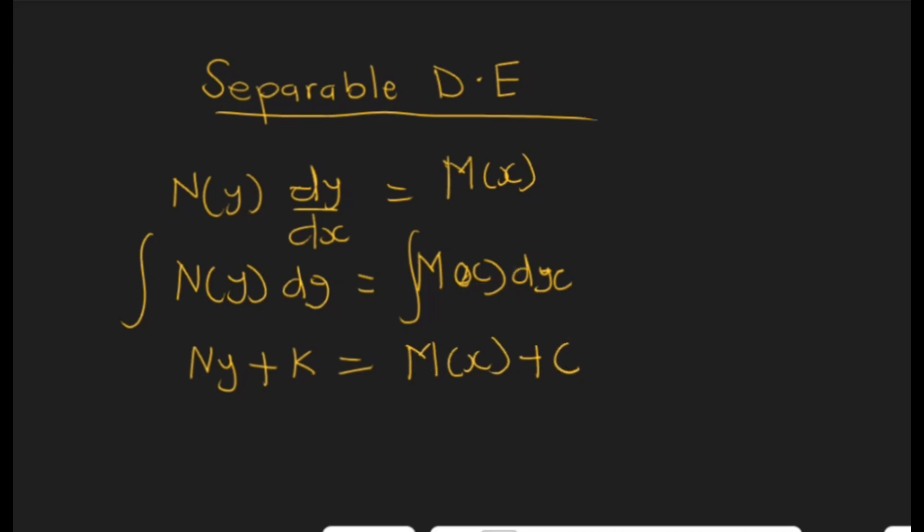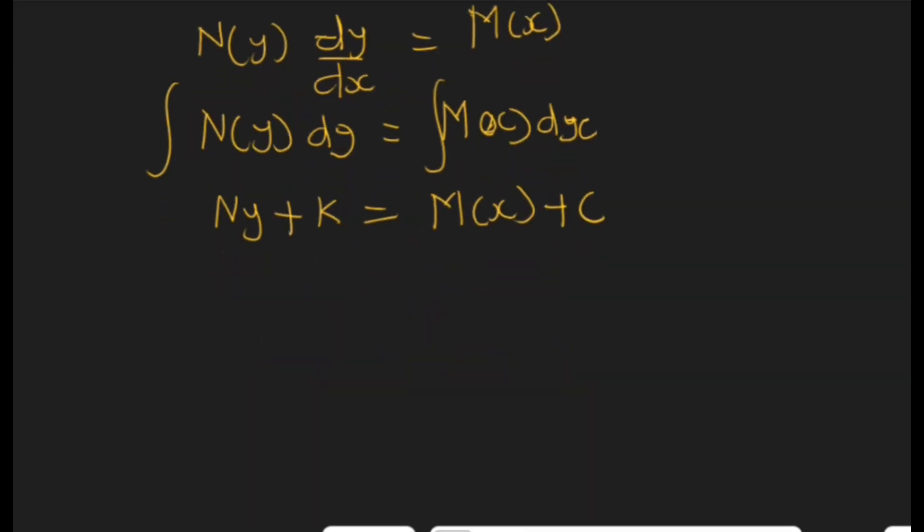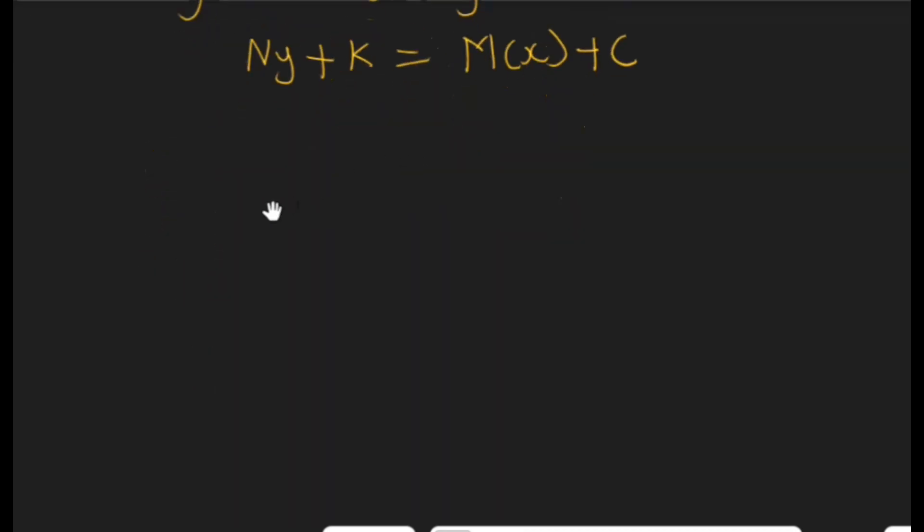Take note, separable differential equation is a type of differential equation where mostly the solutions are in implicit form. That is, normally you can't express the solution as y equals. So it is left in the implicit form. Now let's take a nice example to see how we can solve separable differential equations.